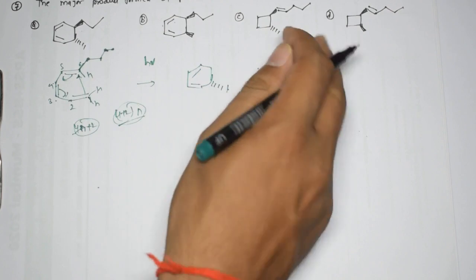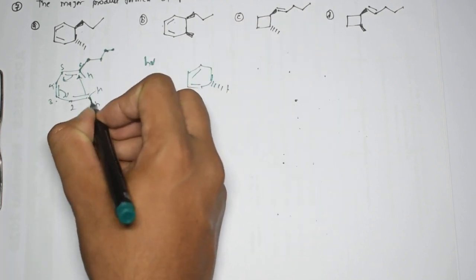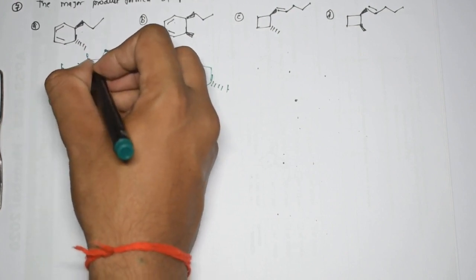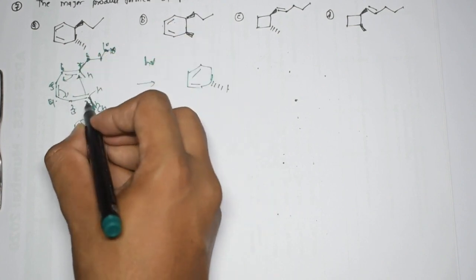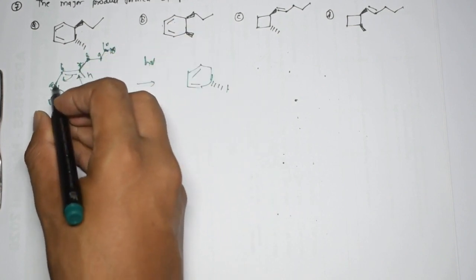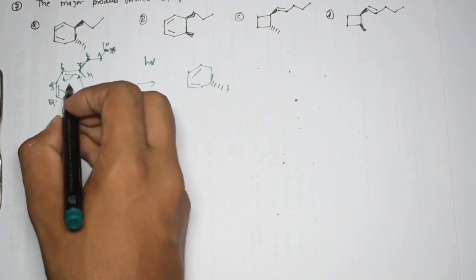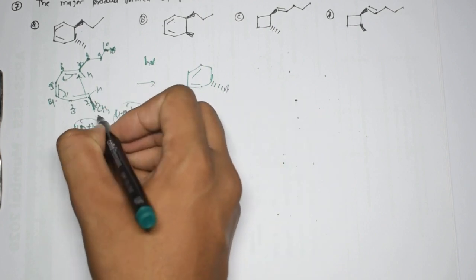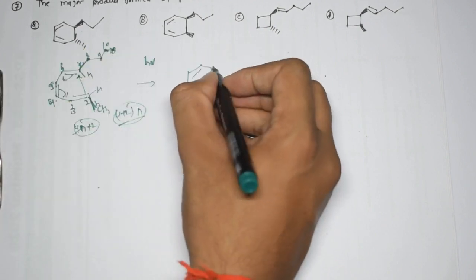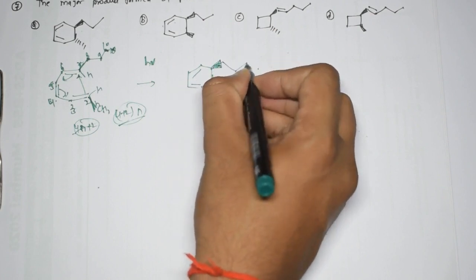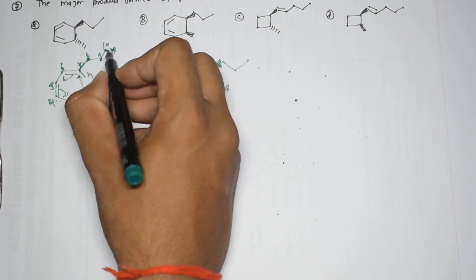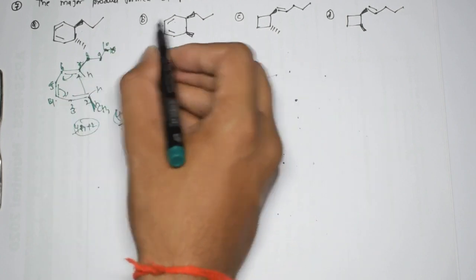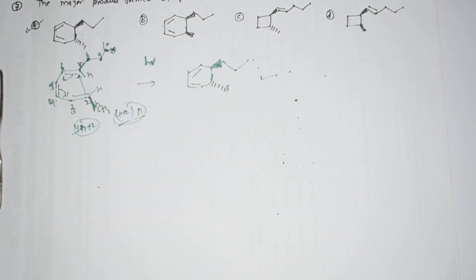Correcting the structure: at position 2 there should be a methyl (2E), then 4Z means two groups on the same side, and 6E applies at position 6. After conrotation, the methyl goes below the plane and the other group comes above the plane. The product is the six-membered ring shown in option A, which is the correct answer.